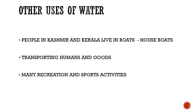Some people in Kashmir and Kerala live in boats. These boats are called houseboats. Ships, boats and sailboats are used for transporting humans and goods from one place to another. Water is needed for many recreation and sports activities such as swimming, river rafting, boating and water skiing.